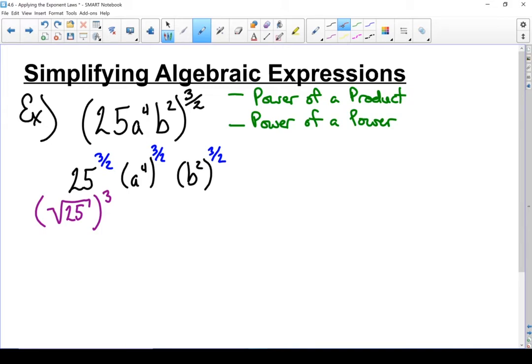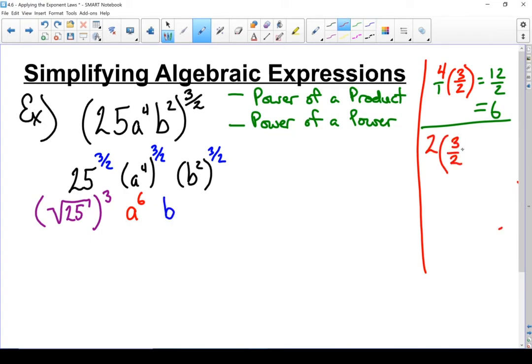Moving on, a to the power of 4 times 3 halves. Using my power of a power rule, I'm going to multiply those two together. Let's just tuck it over here on the side. I've got 4 times 3 halves. Sweet! That fraction went away. I'm looking at a to the power of 6. Moving on to our b, same thing. We're looking at power of a power. Awesome! Same thing again. My fraction went away. So it's b to the power of 3.